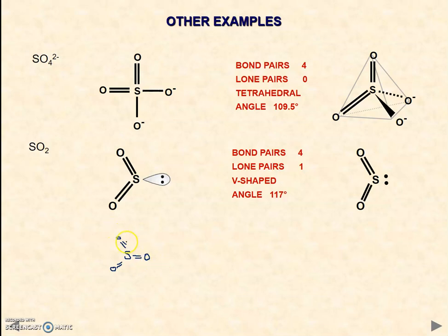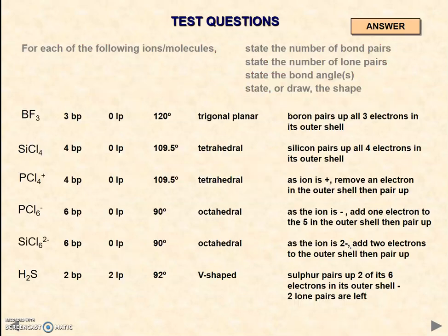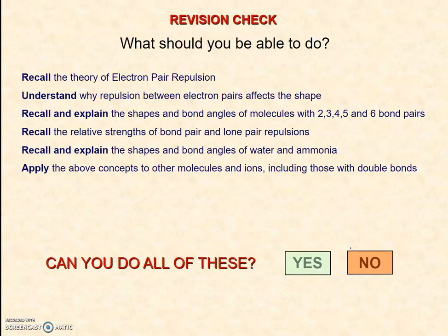In sulfur trioxide, you've got three equal bonding regions, so sulfur trioxide would be 120 degrees bond angle. Therefore, you would expect this to be around about 117 to 117.5 degrees. And here's your revision check. Can you do all these? Thank you for watching.